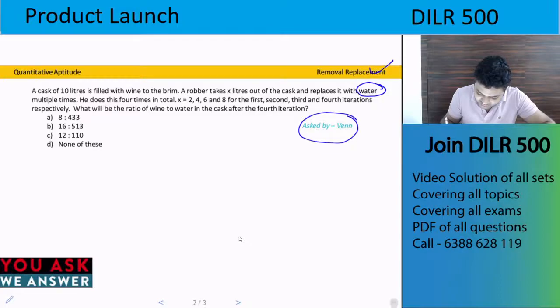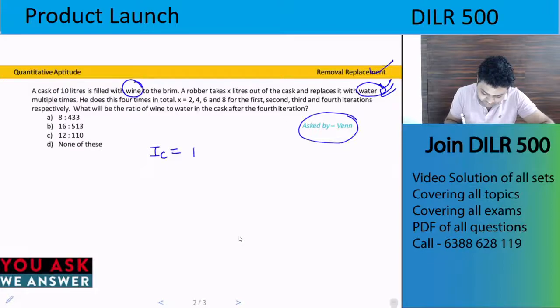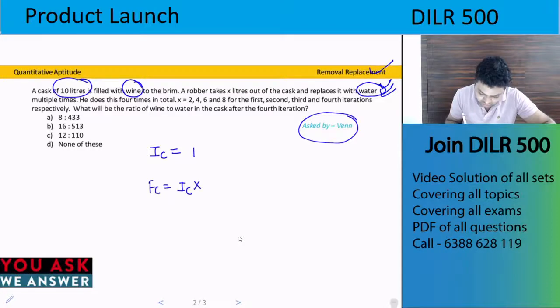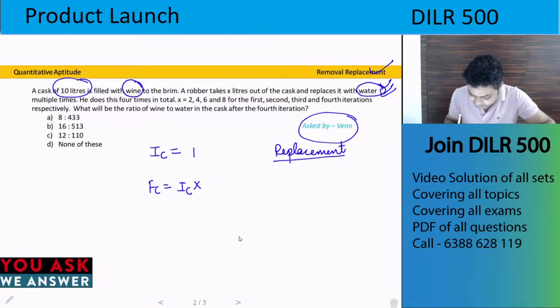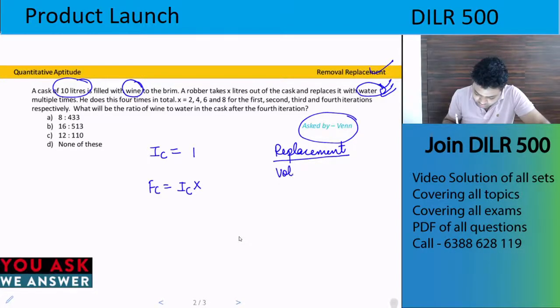We need to focus on the ingredient that is not being replaced, which is wine. We will work on wine. We need the initial concentration of wine, which is 1 because the 10 liter cask only had wine. The final concentration of wine equals initial concentration times multiplying factors. We will get multiplying factors for each replacement case. The multiplying factor is volume of mixture...